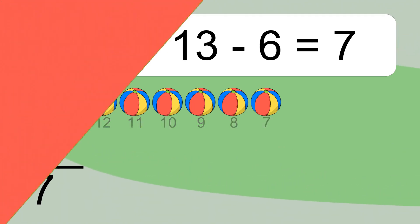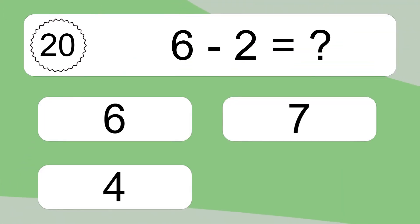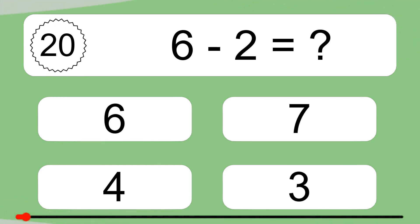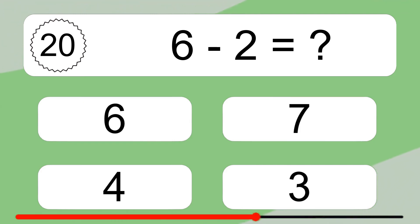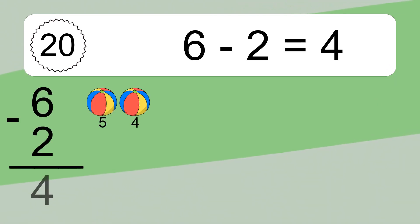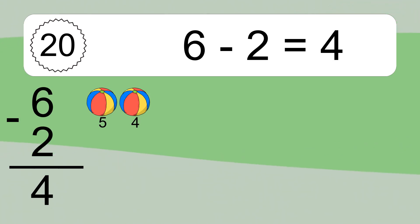6 minus 2 equals what? 6 minus 2 equals 4. Let's count it. 5, 4.